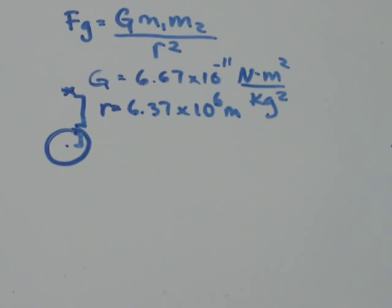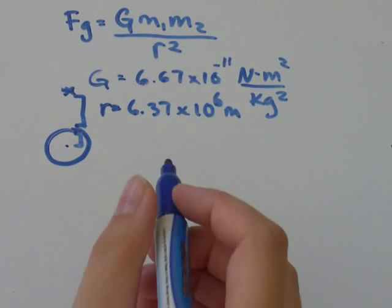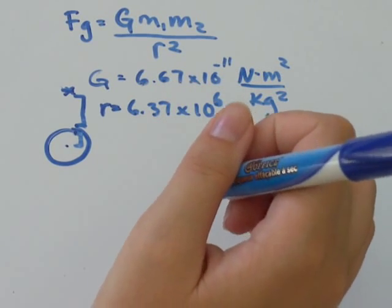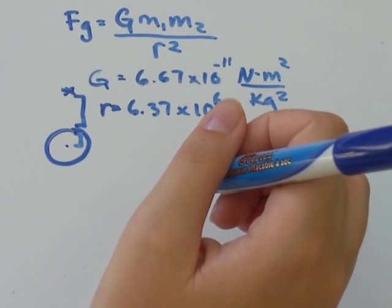So we've got a question. And it says, find the gravitational force of a 70 kilogram asteroid that is 6.37 times 10 to the power of 6 meters above the Earth. The mass of the Earth is 5.98 times 10 to the power of 24 kilograms.